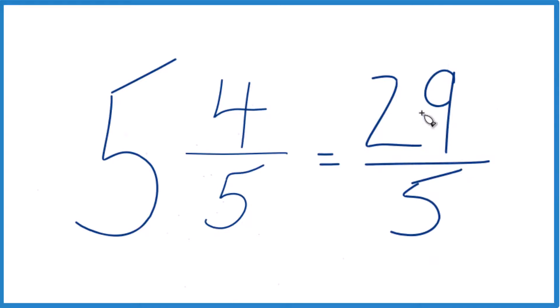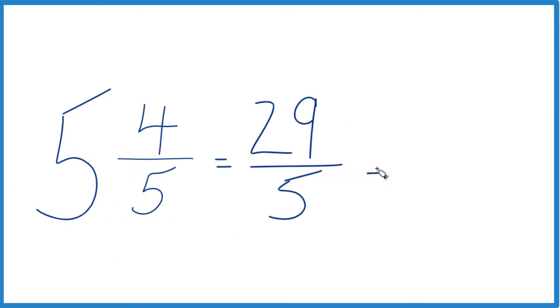You can even check your work here because 5 goes into 29. 5 times 5, that would be 25 and then we'd have 4 left over. Bring the denominator across and we get 5 and 4 fifths. That's the mixed number we started out with, so we know we did it correctly.